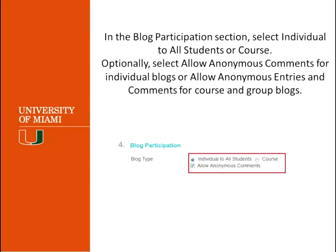The next thing is blog participation. Do you want this to be individual to all students, or do you want this to be a blog for the whole course? The Individual to All Students option will create one blog for each student, so each student will have their own blog. If you make the blog for the course, everybody will be participating in the same blog. Now if you want people to post anonymously, you can allow that to happen — this is optional.